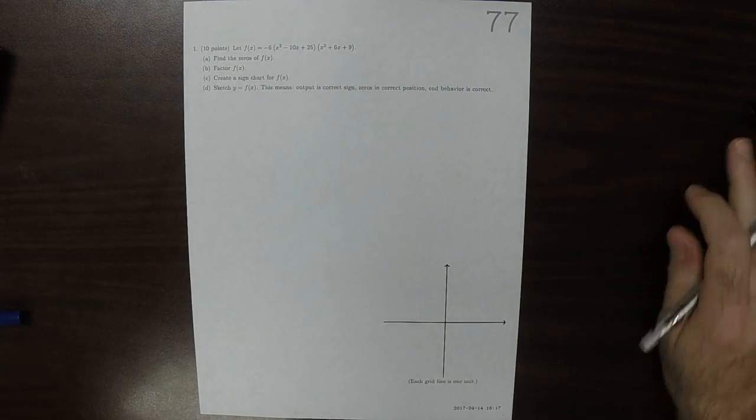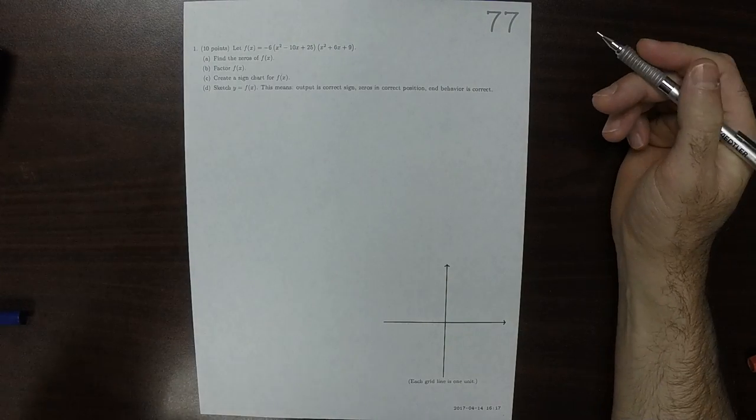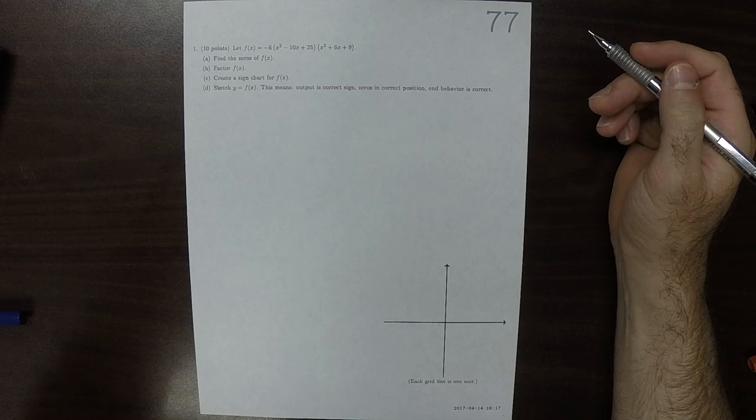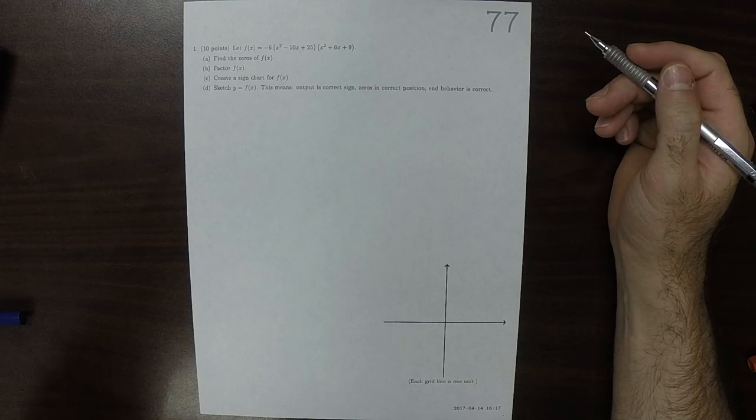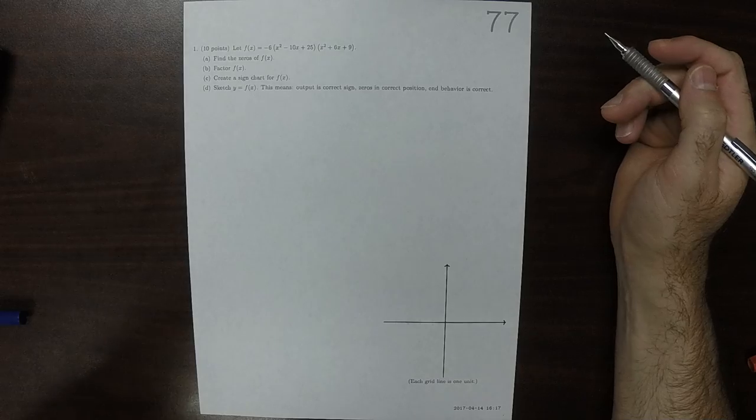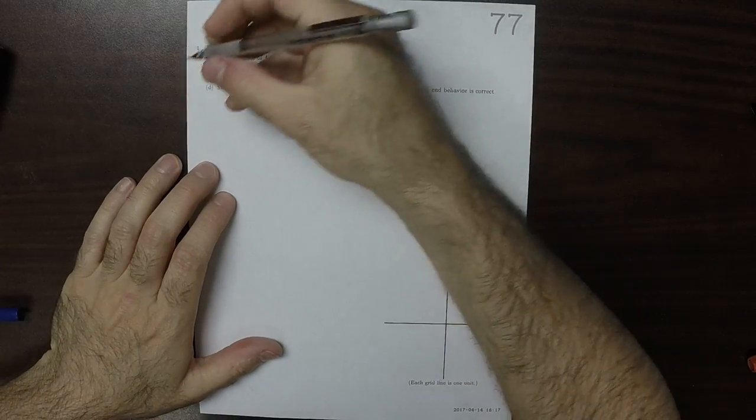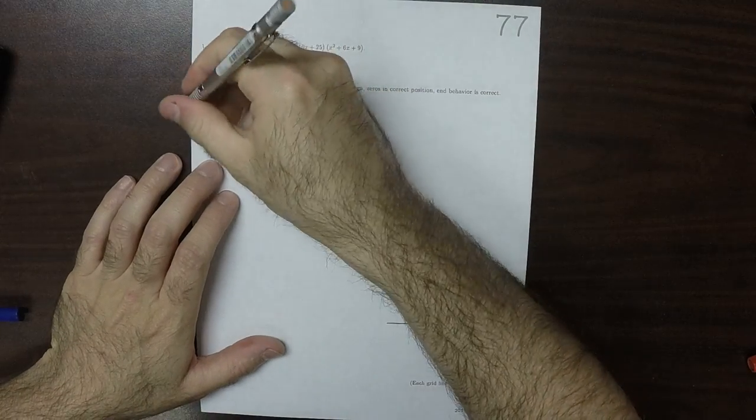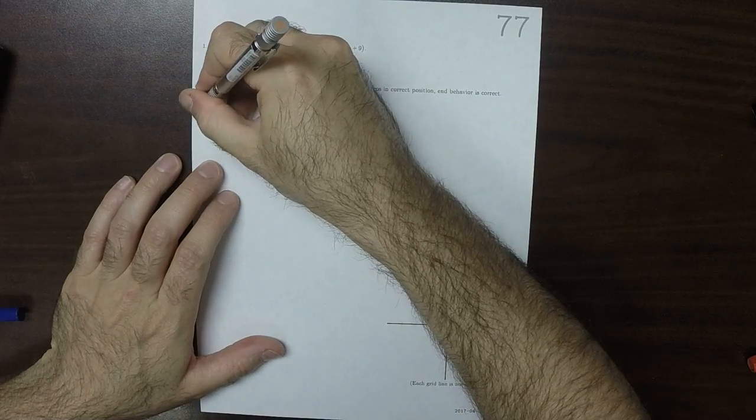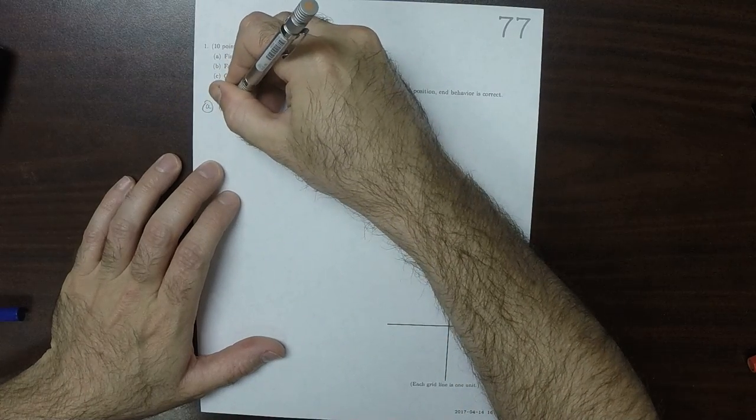This is the solution to written homework 77. So we can do a and b together.